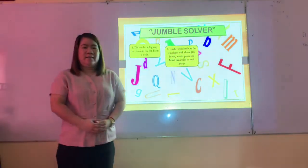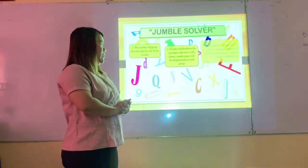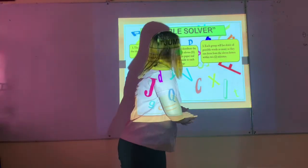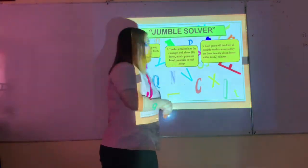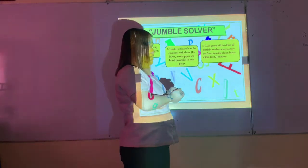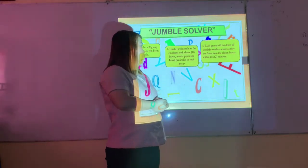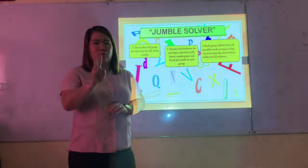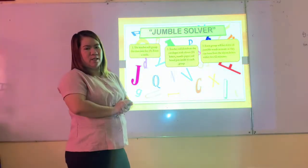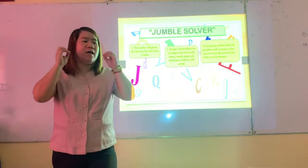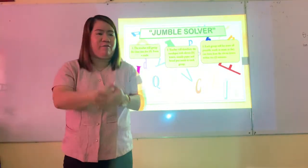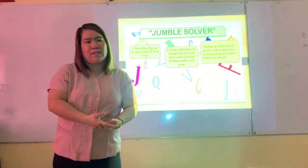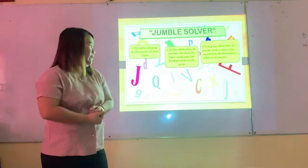Third instruction: each group will list down all possible words, as many as they can form, from the 11 letters within two minutes. So you have 11 letters inside the envelope — form words, as many as you can.